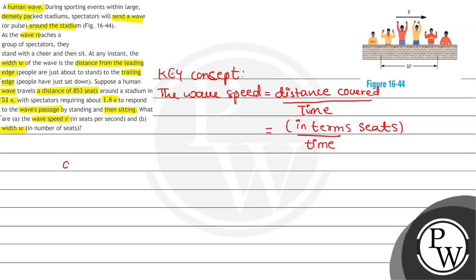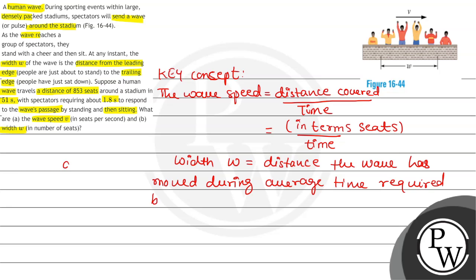And we know that the width W is equal to distance the wave has moved during average time required by a spectator to stand and sit. The width W is the time period where one spectator stands and then sits back. We will calculate this is equal to V into time of response.